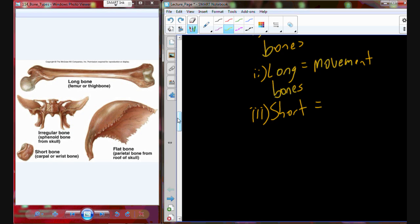The short bones are going to facilitate movement as well, but they are going to be limited movement bones. These are going to include things like the carpals and the tarsals, which are the bones of the hands and the feet, and also the patella, which is the bone in the knee. Those are examples of short bones, and they don't have as much movement as long bones, but they still provide a small amount of movement.